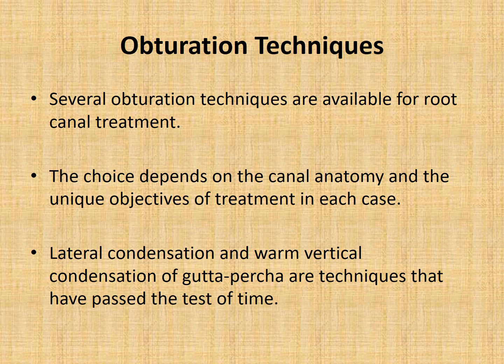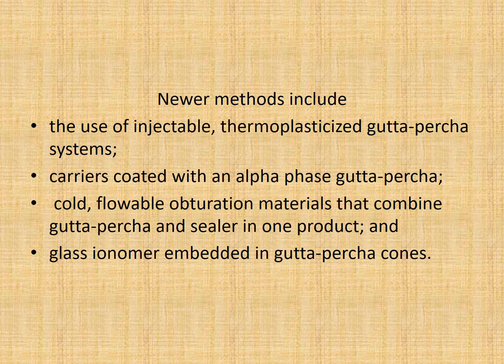Moving on to the introduction in obturation techniques: there are various methods currently available. The choice depends upon the canal anatomy and your own unique objectives of treatment for each case. Lateral condensation and warm vertical condensation of gutta percha are most commonly employed and have passed the test of time. Newer methods include injectable thermoplasticized gutta percha systems, carrier coated with alpha phase gutta percha, cold flowable obturation materials combining gutta percha and sealer as one product, and glass ionomer embedded in gutta percha cones.